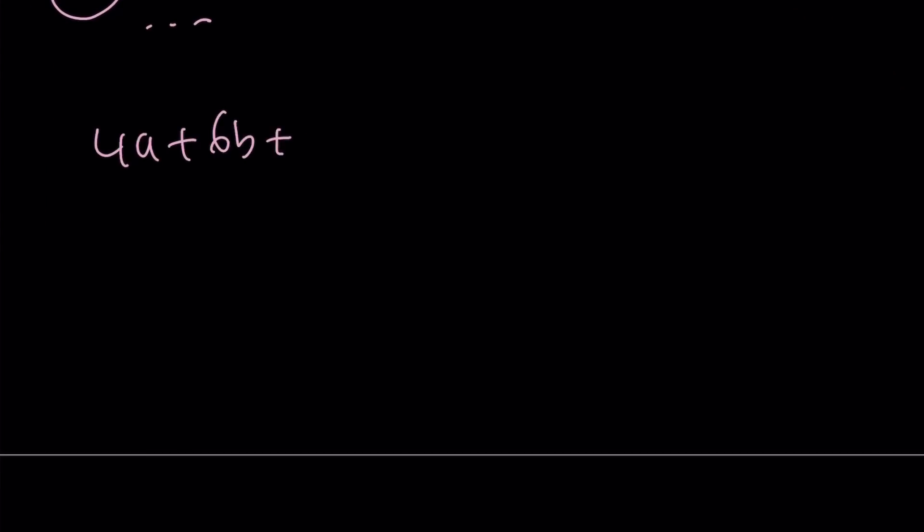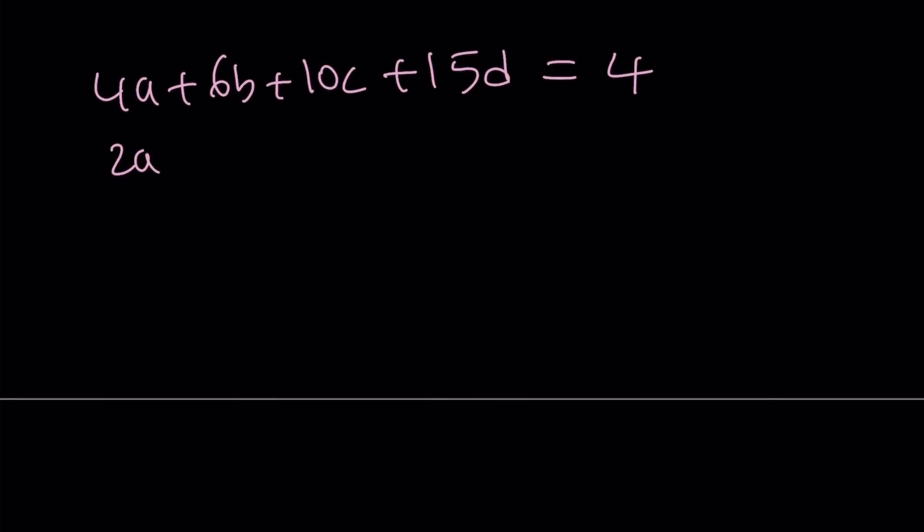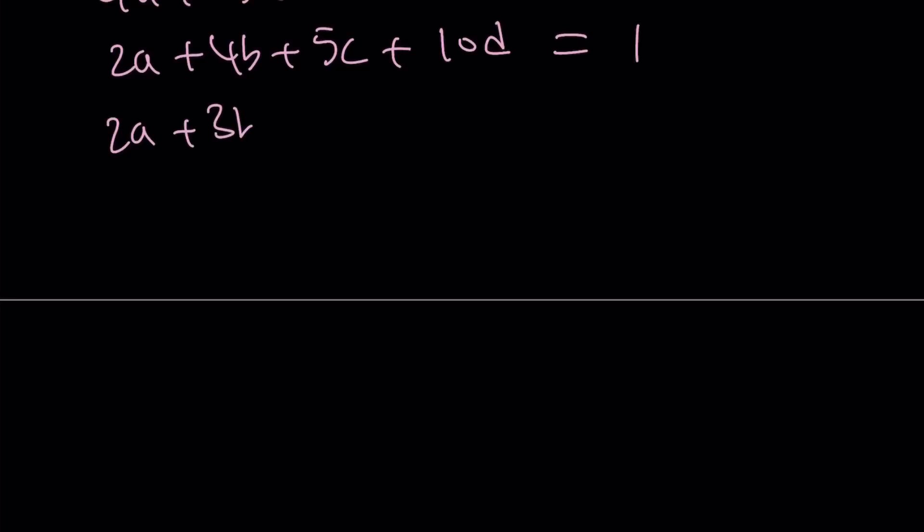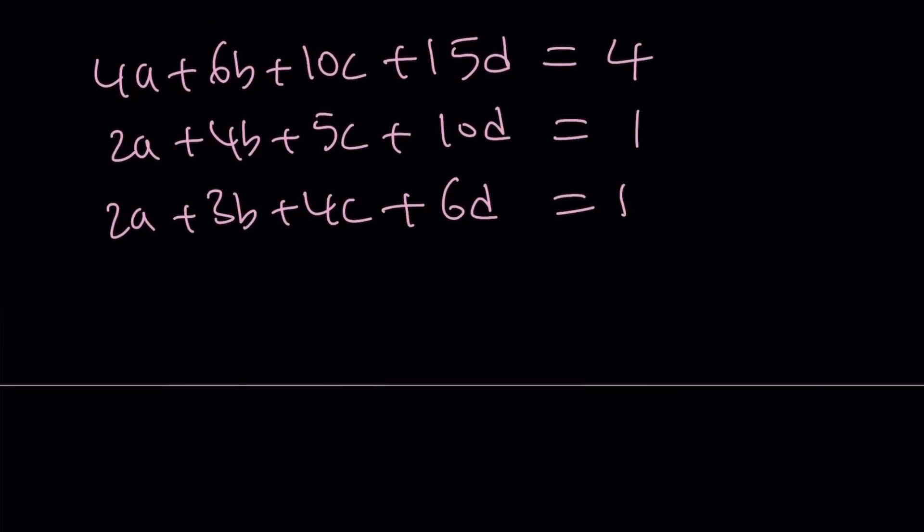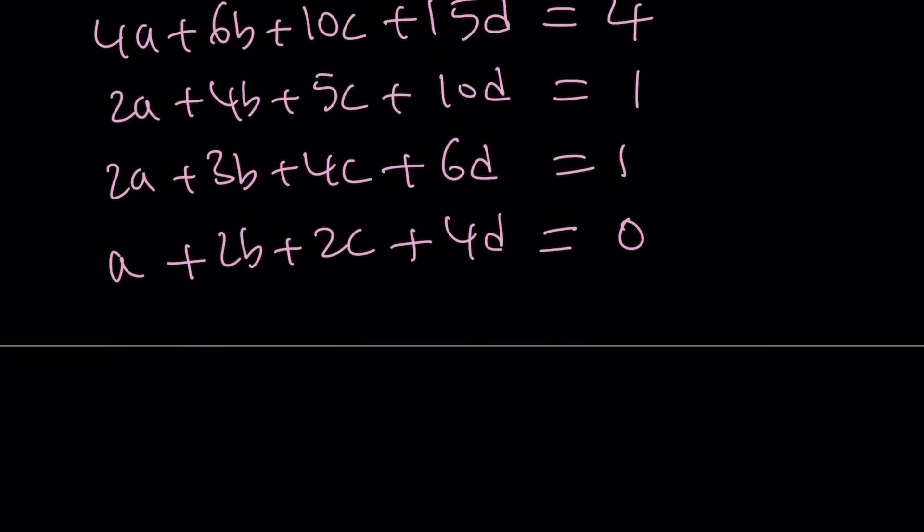4a plus 6b plus 10c plus 15d. These are going to be the sum of all rationals on both sides, and that's going to equal 4, because we have 4 on the right-hand side. And then the coefficients of root 3 is going to be 2a plus 4b plus 5c plus 10d, and that's going to equal 1, because we only have a single root 3 in the numerator. And then we're going to have 2a plus 3b plus 4c plus 6d equals 1, that's going to be the coefficient of root 5. And finally, we have a plus 2c plus 4d is equal to 0, because we don't have any root 15 here, but we have a root 15 in the denominator, so the coefficient of that number, after you do all the simplifications, needs to be 0.